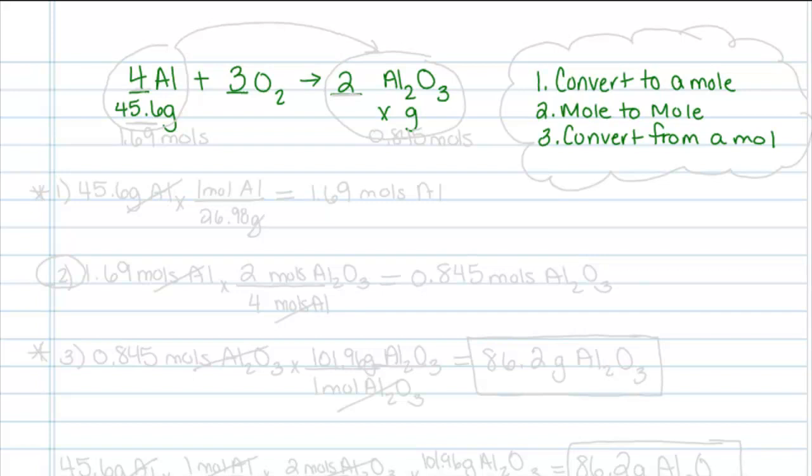What that is going to do is help us focus on our two substances, aluminum and aluminum oxide. So we want to go from aluminum to aluminum oxide. So the balanced chemical equation simply tells us a mole to mole relationship.